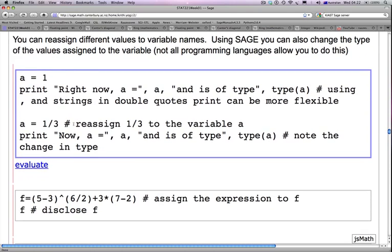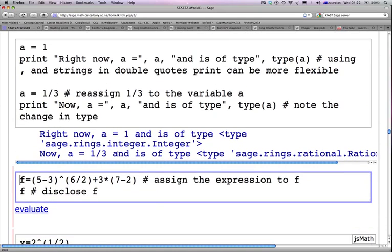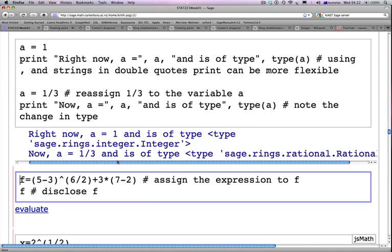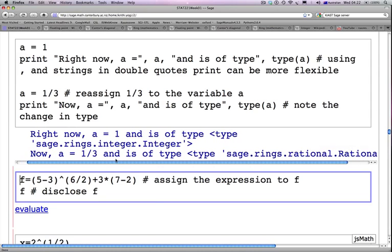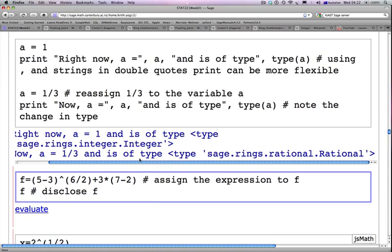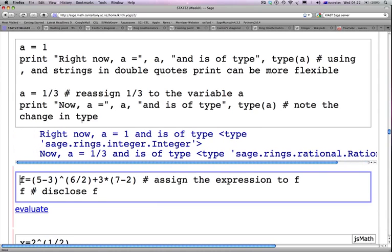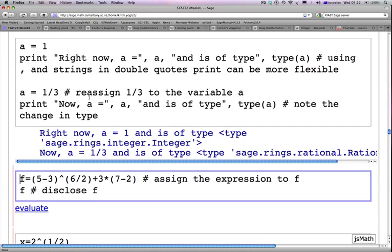Once again, if a is one-third, and we are reassigning one-third to the variable a, remember, earlier a was assigned the integer 1, and now we are printing, "now a equals a," and is of type, type a. If we evaluate this, it looks as follows. Right now, a is 1, and is of type integer, and the next line says, now a is one-third, and is of type SAGE rings rational. Have a play around with this. Just remember that the same variable can be reassigned different types.